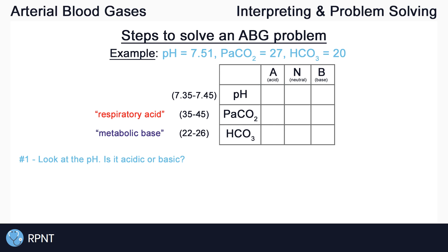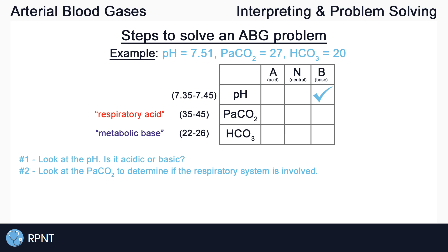First, we always want to look at our pH to determine whether it is basic, neutral, or acidic. In this case, pH is 7.51, which is higher than the normal range of 7.35 to 7.45, so let's go ahead and put that in the basic column. Second, we look at our PaCO2 to determine if the respiratory system is involved. Our PaCO2 here is 27, which is below the normal range of 35 to 45. The lower the PaCO2, the more basic the blood becomes, so we can check off PaCO2 as being basic as well.